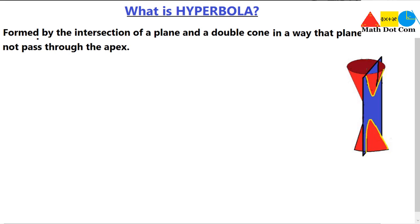Let's understand quickly what a hyperbola is and how it differs from the other types of conics we have discussed in previous lectures. Hyperbola is a type of conic, just like circle, ellipse, and parabola. Let's have a short overview of how it is formed, and then we will see how it differs from the rest of the conics.